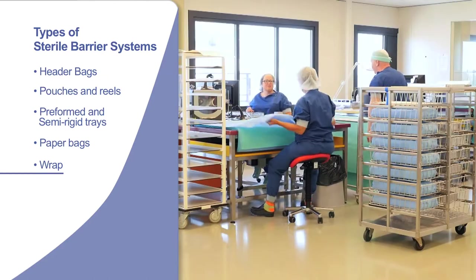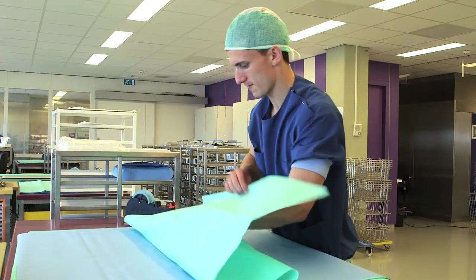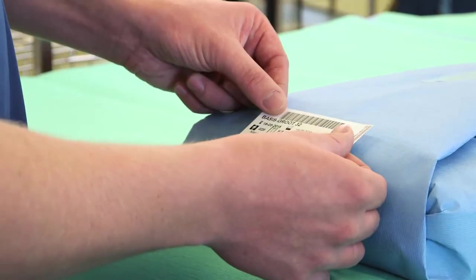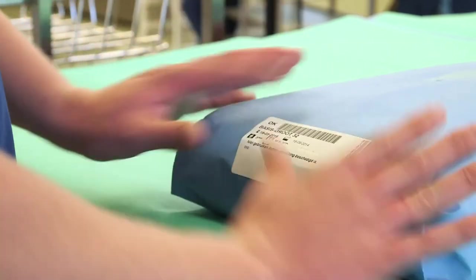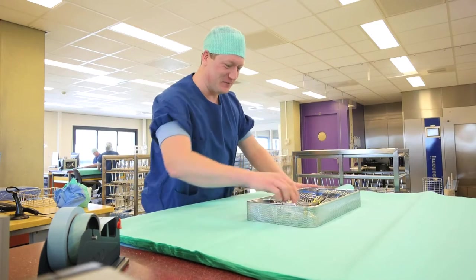Sterilization wrap comes in a number of different weights, colors, and sizes. Wraps can be made of various materials ranging from 100% crepe paper to non-woven products such as synthetic reinforced papers and 100% polypropylene material.